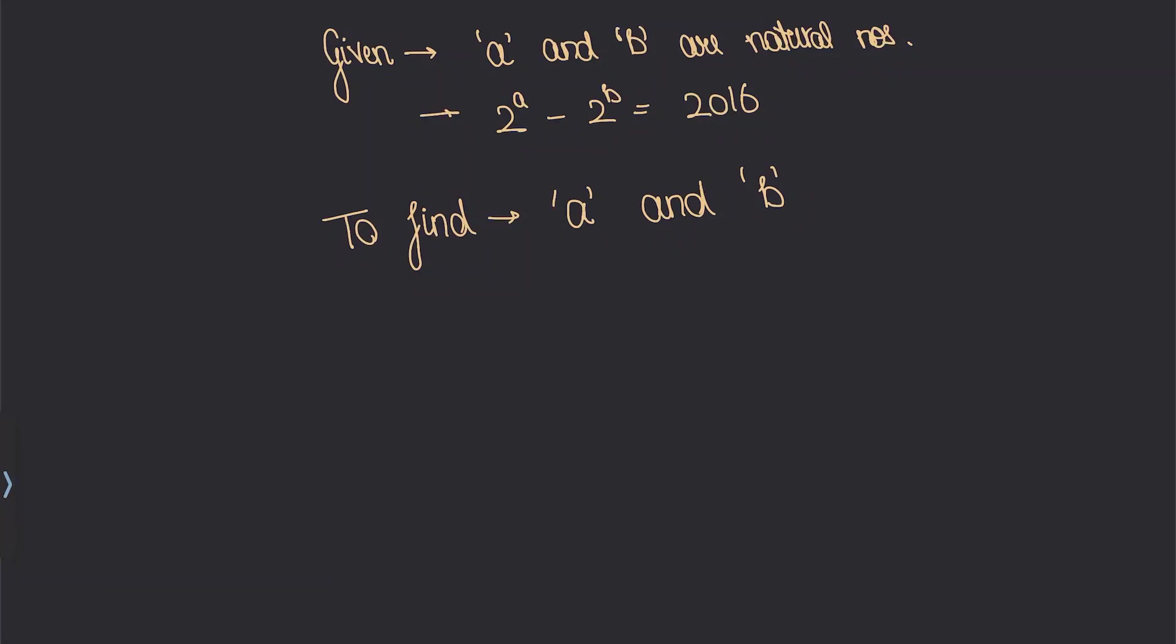Hello students, welcome. In this equation we are given that 2^a - 2^b = 2016, and we are supposed to find the value of a and b. Now generally, when we have to find the value of two variables, we need two equations.